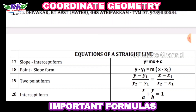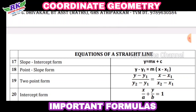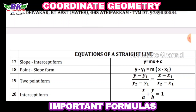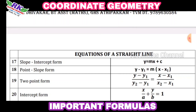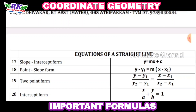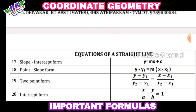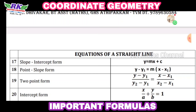Slope and intercept form: given slope M value and C value, the equation of the line is y equals mx plus c. If one point and slope are given, the formula is y minus y1 equals m into x minus x1. If two points are given, the equation is: y minus y1 over y2 minus y1 equals x minus x1 over x2 minus x1. For intercept form with x-intercept and y-intercept, the formula is x over a plus y over b equals 1.